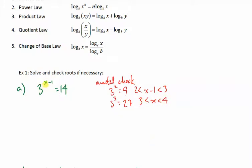For example, I put 3 in there. The exponent becomes 2. 3 squared is 9, which is less than 14. If I put 4 in here, I get a number more than 14. So, I know I'm looking for a number between 3 and 4.